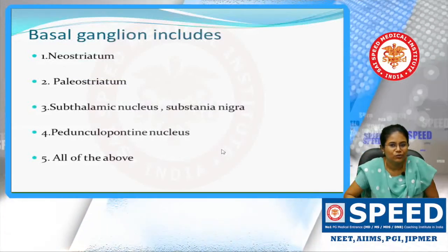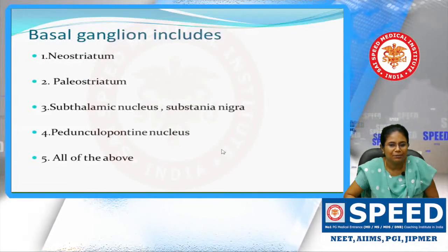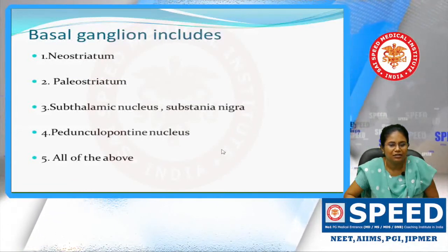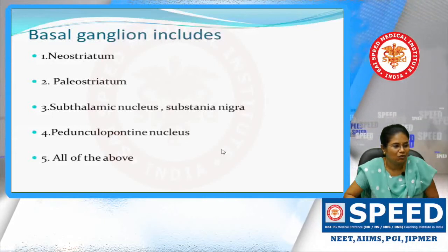The options are: neostriatum, paleostriatum, subthalamic nucleus, substantia nigra, pedunculopontine nucleus, or all of the above.